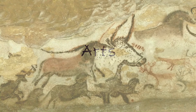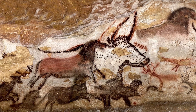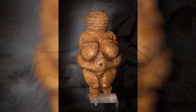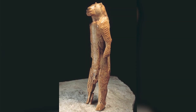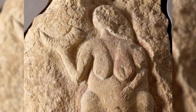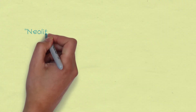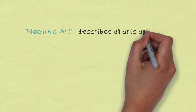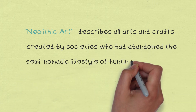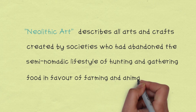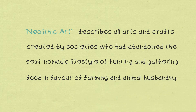And lastly, their arts. In the Paleolithic period, there are two main forms of Paleolithic art known to modern scholars: small sculptures, and monumental paintings, incised designs, and reliefs on the walls of caves. In the Neolithic era, the term Neolithic art describes all arts and crafts created by societies who had abandoned the semi-nomadic lifestyle of hunting and gathering in favor of farming and animal husbandry. Here are some sample pictures of their arts.